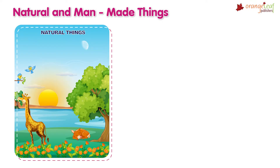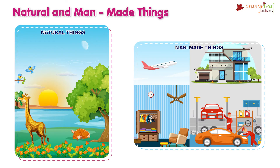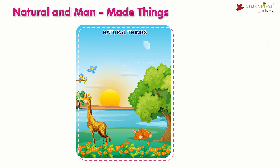Natural and man-made things. Many things are visible to us. Some of them are natural while others are man-made. The things that we obtain from nature are known as natural things. For example, the sun, moon, air, water, plants, and animals.